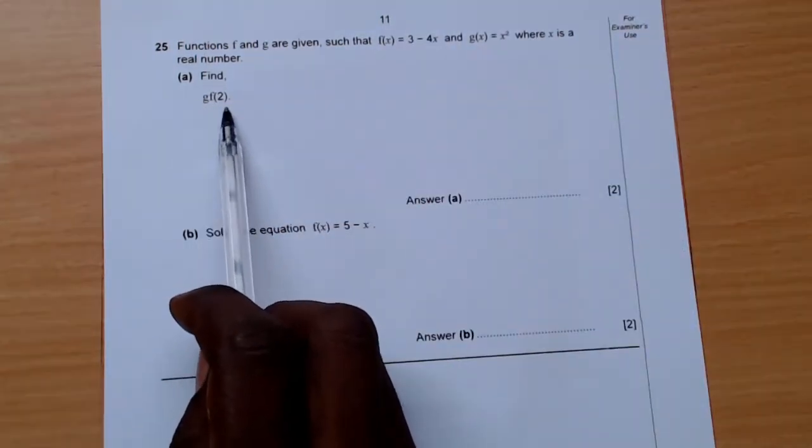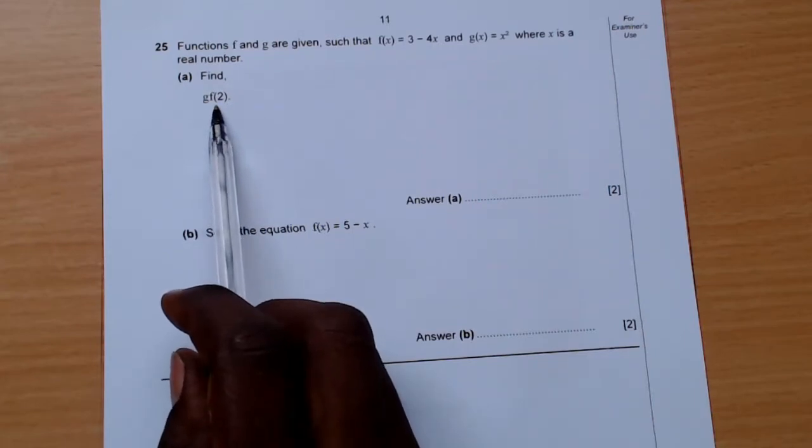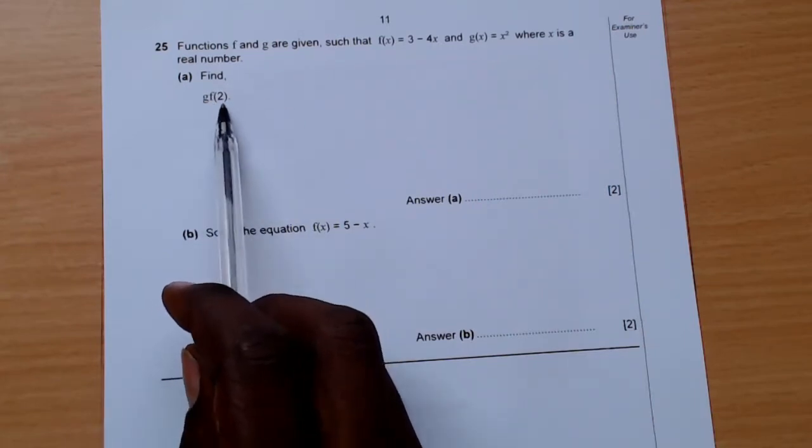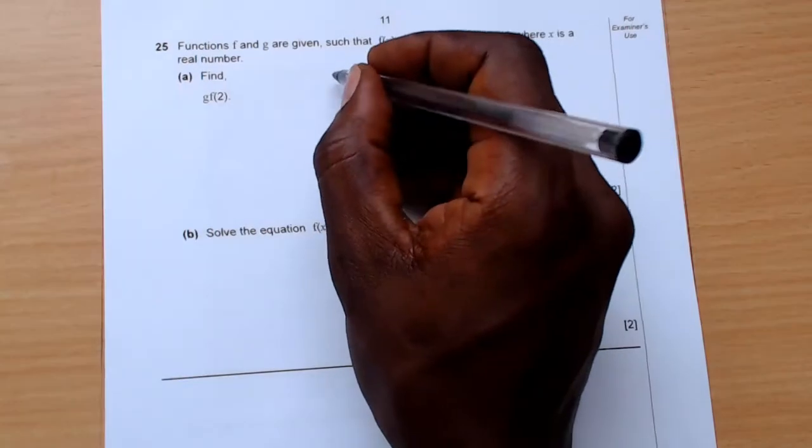With composite functions, there are two ways of doing it. You can first find g(f(x)) and then find g(f(2)), or you can do step by step. We'll use the step by step method as it's the easiest.